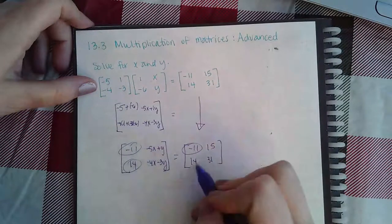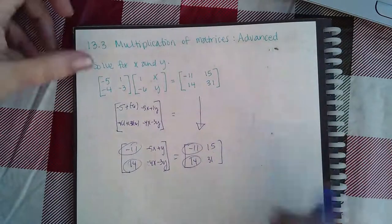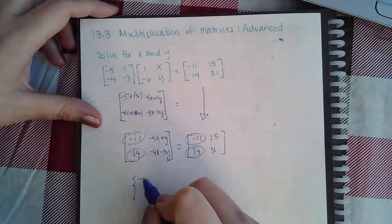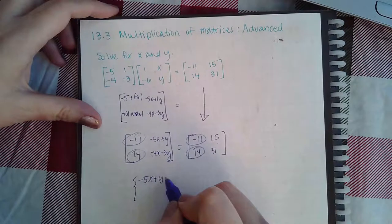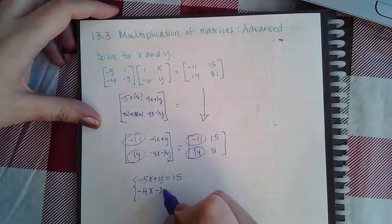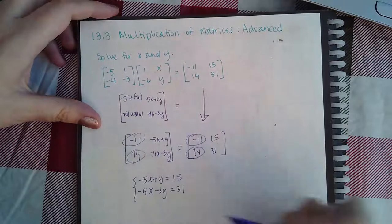Now what I have to do is solve this system of equations where negative 5x plus y will equal 15, but then also negative 4x minus 3y will equal positive 31.